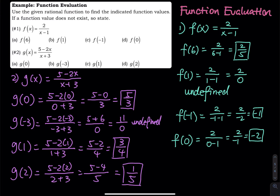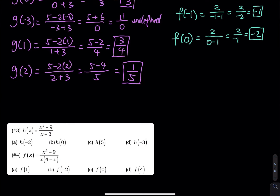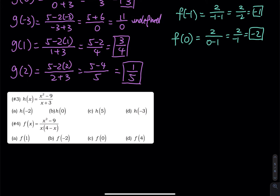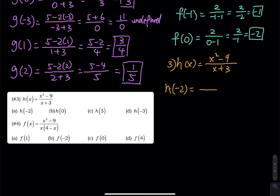So that's the first two problems. I have two more for you. Let's take a look at number 3 — switching to another color. We have h of x, where h is the name of the function, equals x squared minus 9 divided by x plus 3. When x is equal to negative 2, we have negative 2 squared minus 9 over negative 2 plus 3. The bottom is 1, the top is 4 minus 9 equals negative 5. So overall, that equals negative 5.